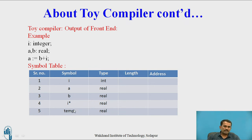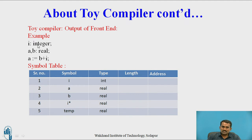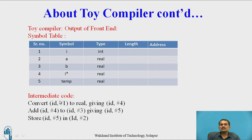Now we know how to generate the intermediate code or intermediate representation (IR). Based on this table — after creating the symbol table from the problem statement — we now see how to create the IR, that is the intermediate code. Whatever steps we followed while converting, we write those steps here as intermediate code.